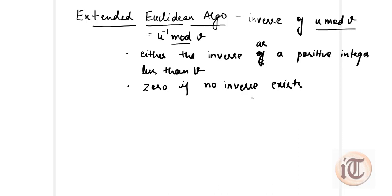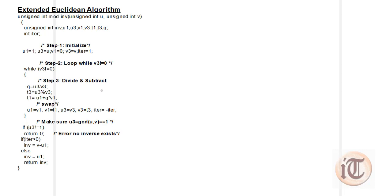To solve a problem on the Extended Euclidean Algorithm, we first discuss what the algorithm looks like. Initially we have parameters: u, v, u1, u3, v1, v3, t1, t3, q, and iteration. Step one is to initialize values: u1 = 1, u3 = u, v1 = 0, v3 = v, and iteration = 1. Here u and v are the values for which we calculate the inverse.